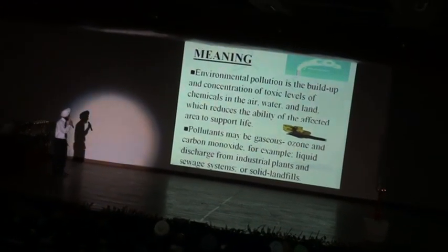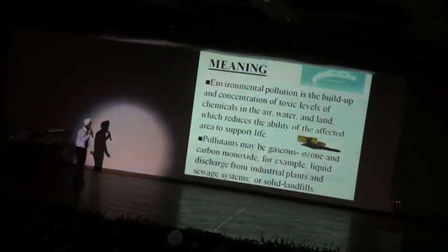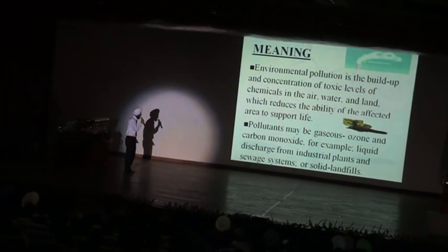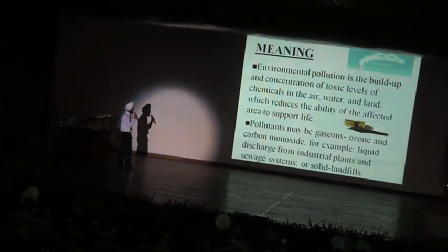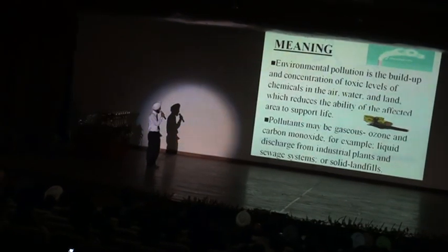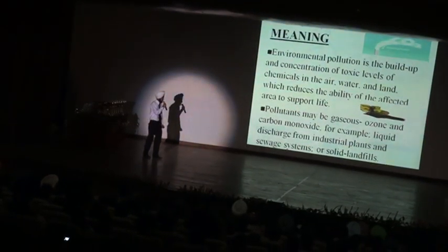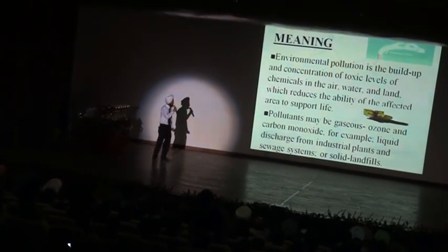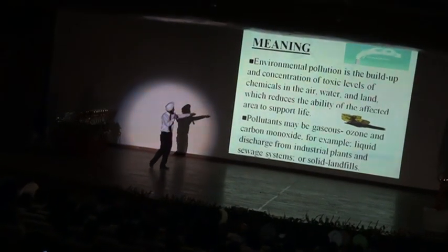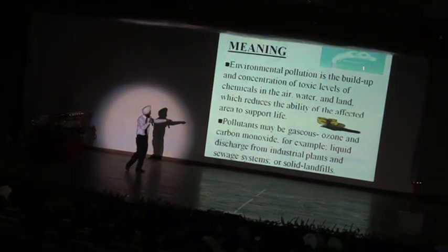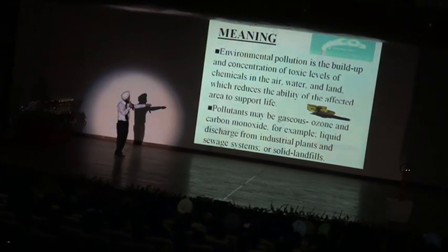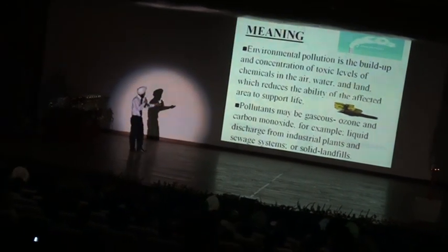Now, if we see towards the presentation, pollutants may be gaseous — ozone and carbon monoxide — for example, liquid discharged from industrial plants and sewage waste systems, or solid landfills. If we see towards the diagrams, both diagrams explain about the pollution which is created through factories or by waste.